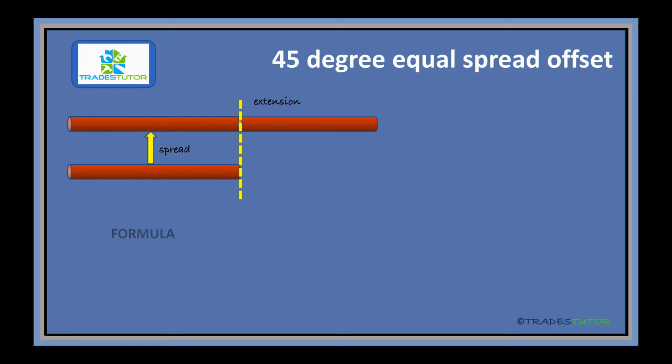So what we're going to need is a formula. The formula: the extension is equal to the spread times 0.414. So if we do an example, making the spread 7 inches, we'll throw that number in there, and the extension would be 2.90 inches.